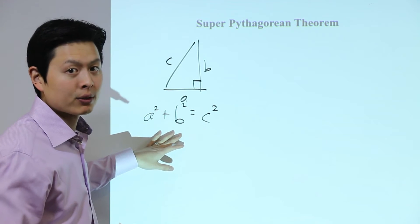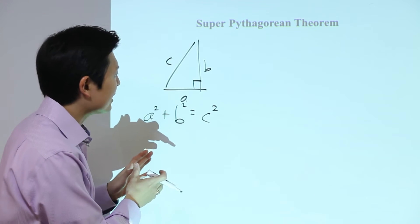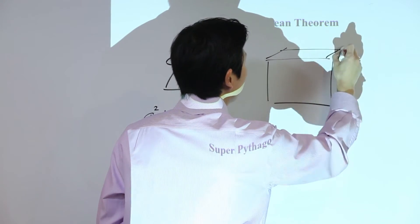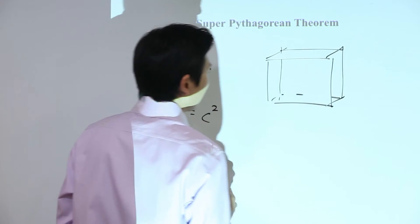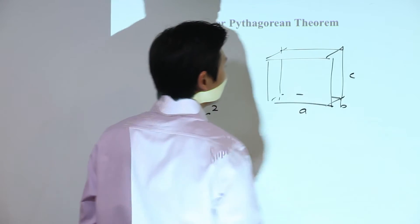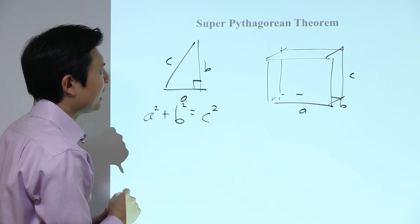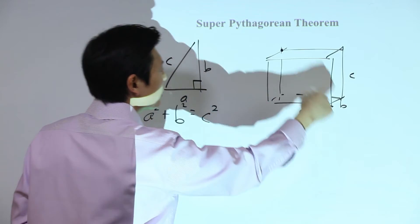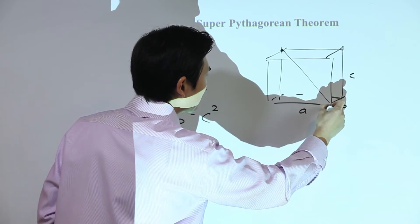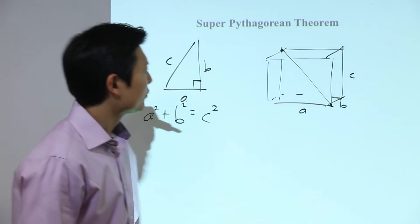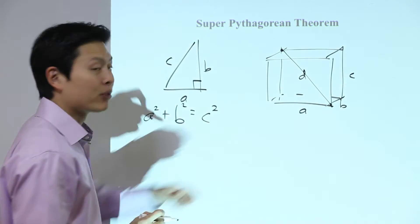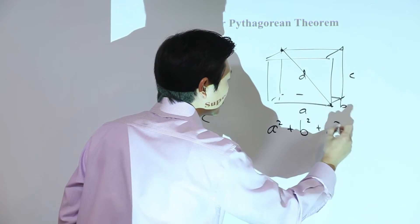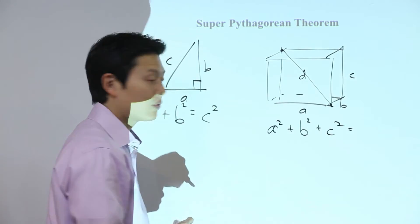We can use this for any right triangle. A similar idea also applies to any rectangular box. That rectangular box has dimensions a, b, and c — which are kind of like the legs — and then the longest length d, which goes from one far corner in the back all the way to the opposite front corner. The relationship between these four variables is: a squared plus b squared plus c squared equals d squared, the longest length in the figure squared.